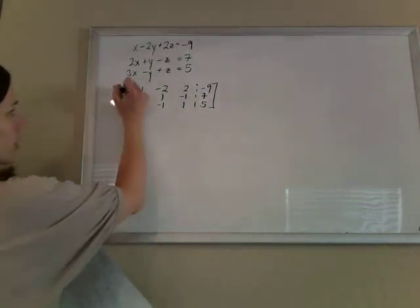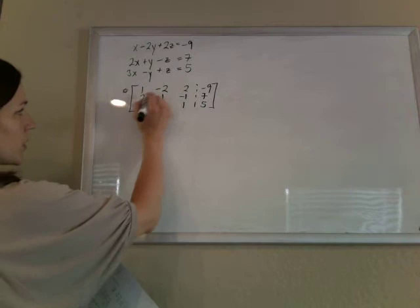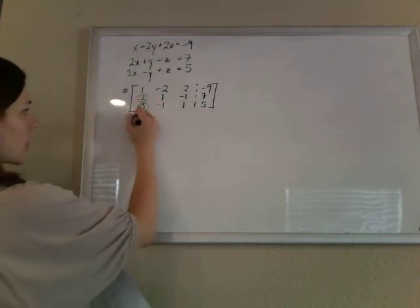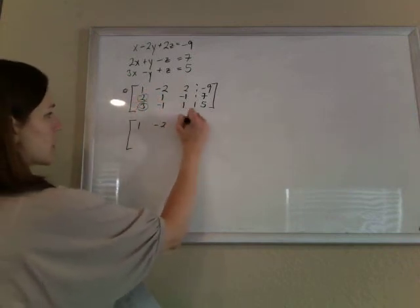There we go. So again, first row to make zeros in the first column. So the first row stays the same.